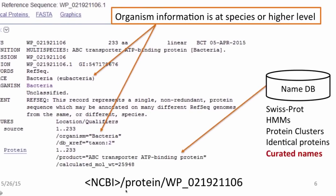Very recently, we've added a database that is being used to manage protein names. Within that database we have stored all of the protein names currently used for our non-redundant protein records, all of the Swiss protein names. We are collecting and generating a large dataset of HMMs, doing protein clustering, looking at identical proteins, and curating names. We are embarked on a very massive initiative to improve and standardize the protein names on these records, and you should look for improvements to continue throughout the course of this year.